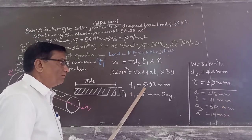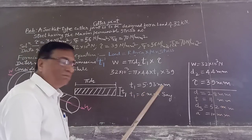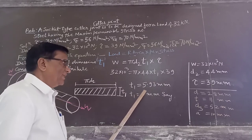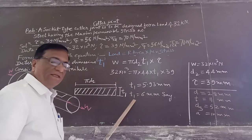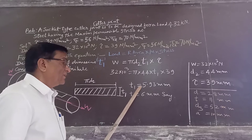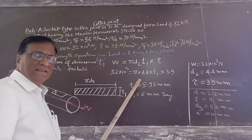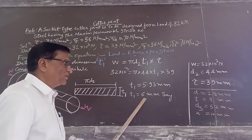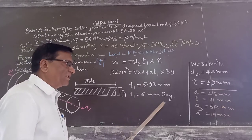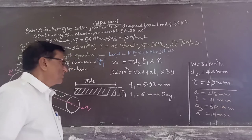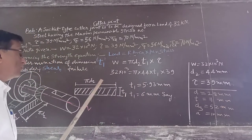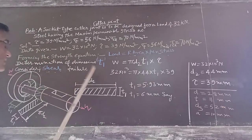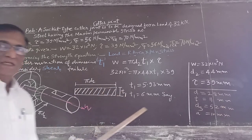T1 comes out to be 5.93 mm. Taking the increased dimension, the thickness T1 is equal to 6 mm. So this is how we calculate the thickness of the spigot collar.